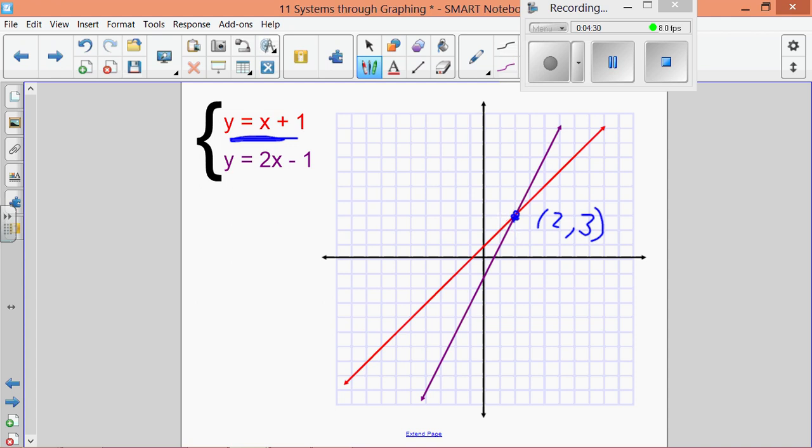So that means that this system of equations only has one solution, and that solution is the ordered pair (2, 3). Again, because that's the only place that both graphs have in common.